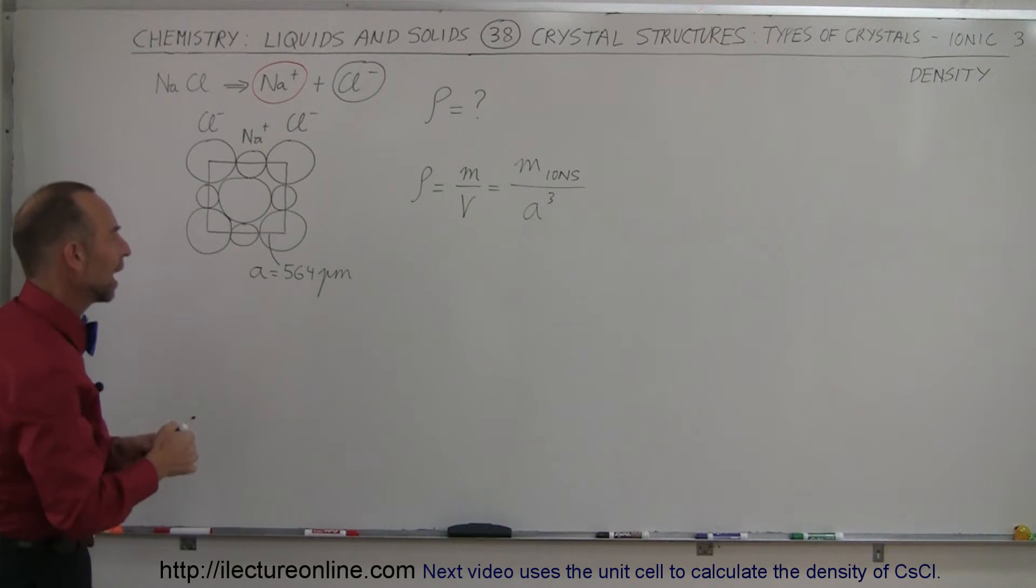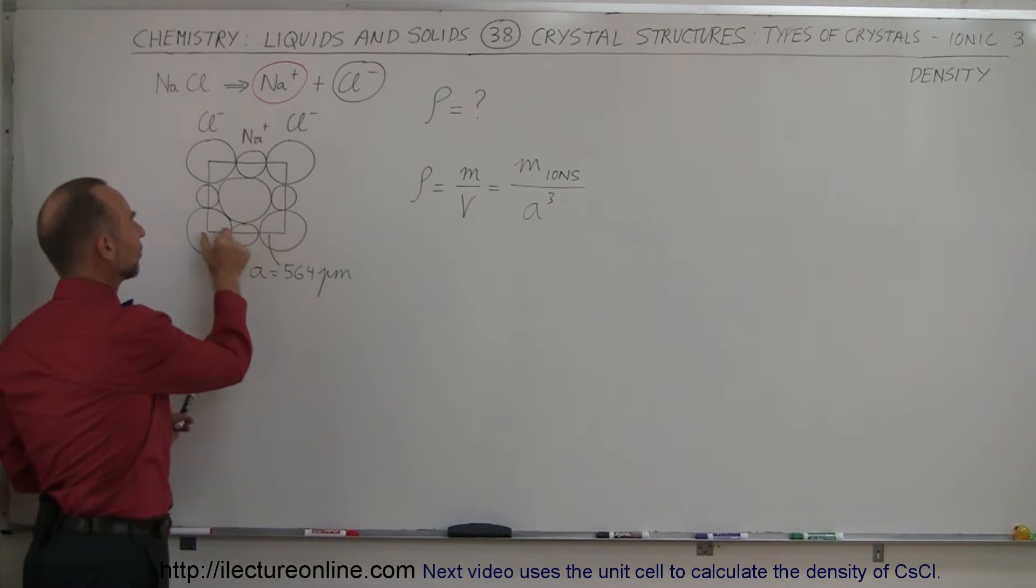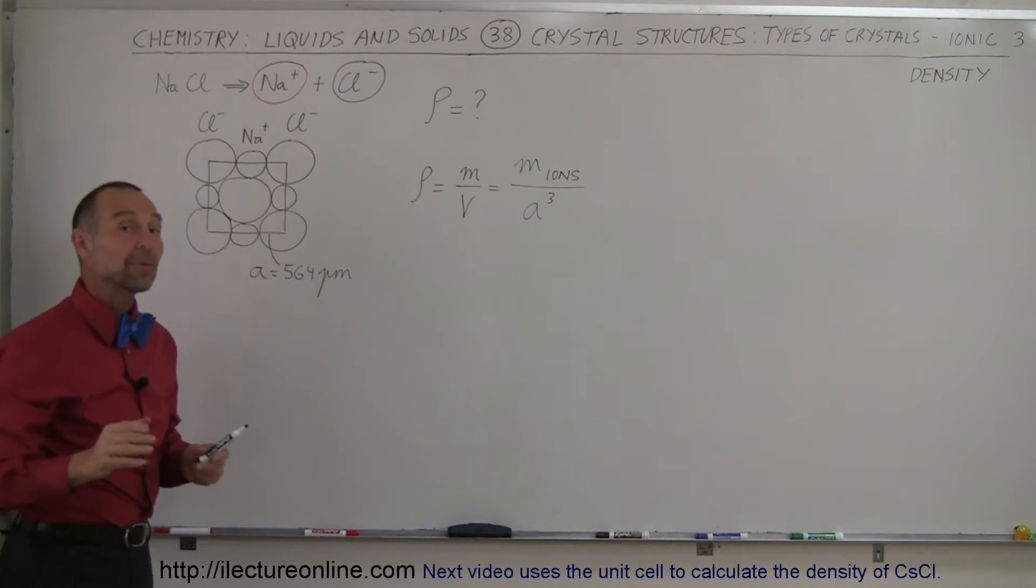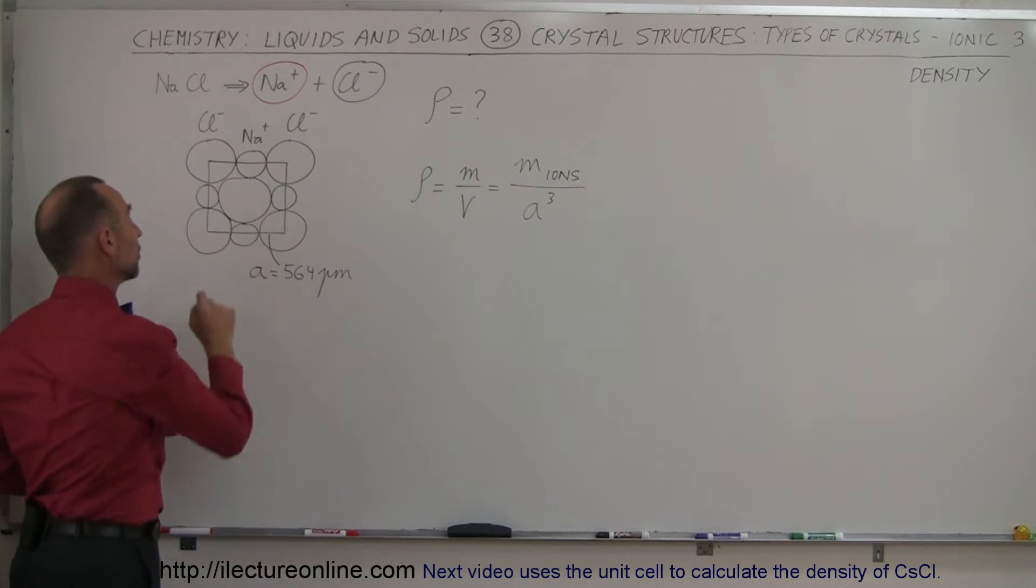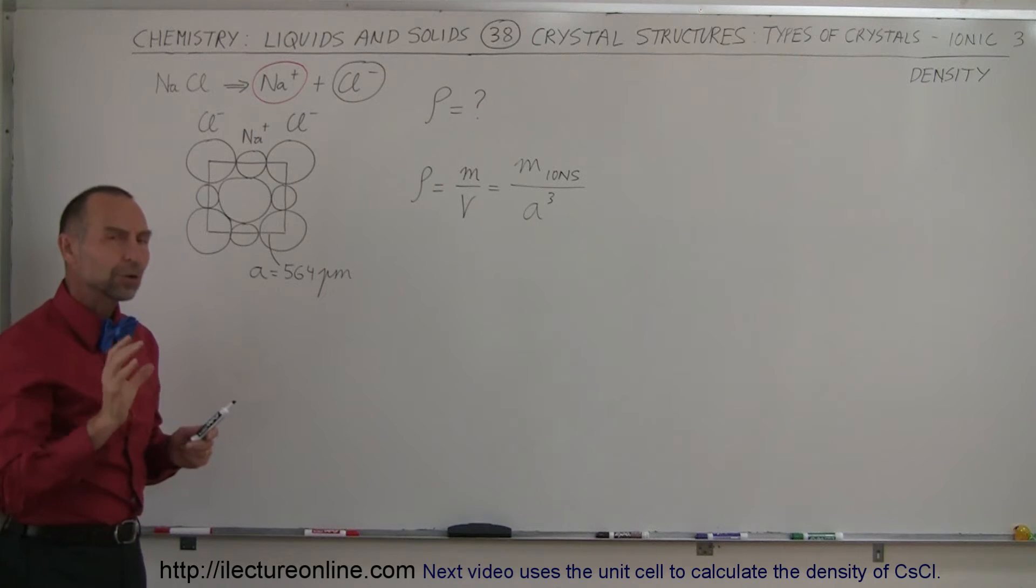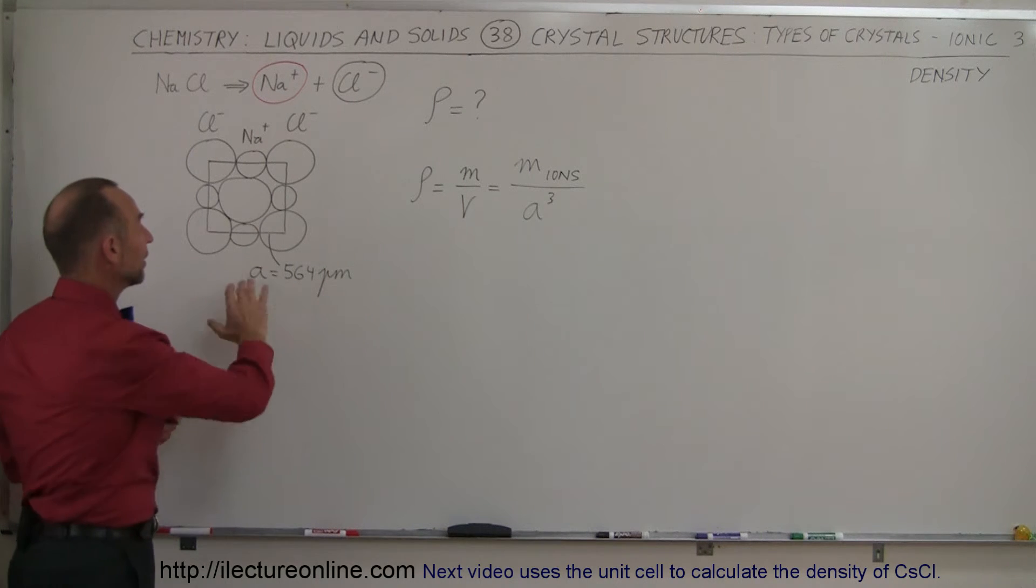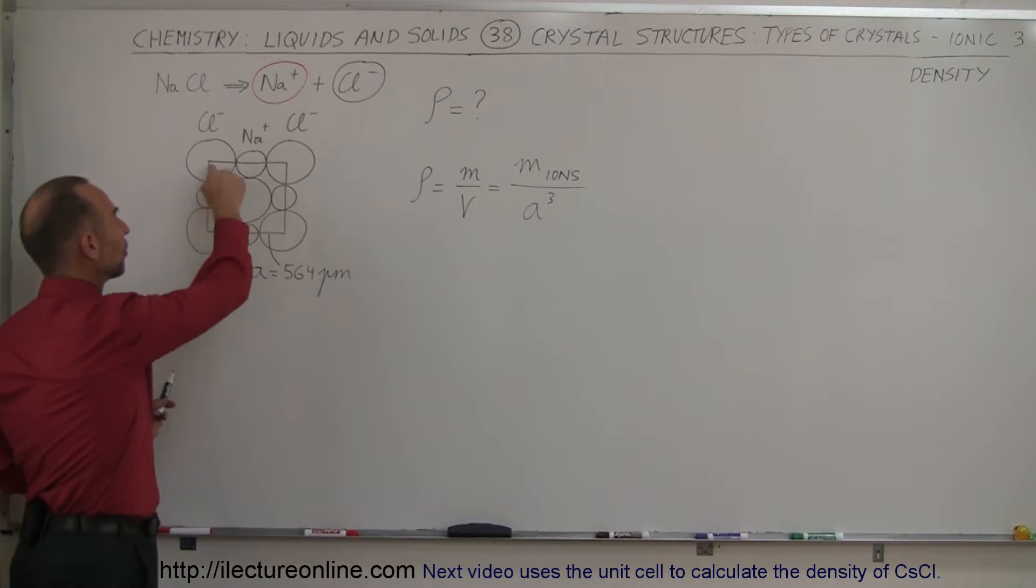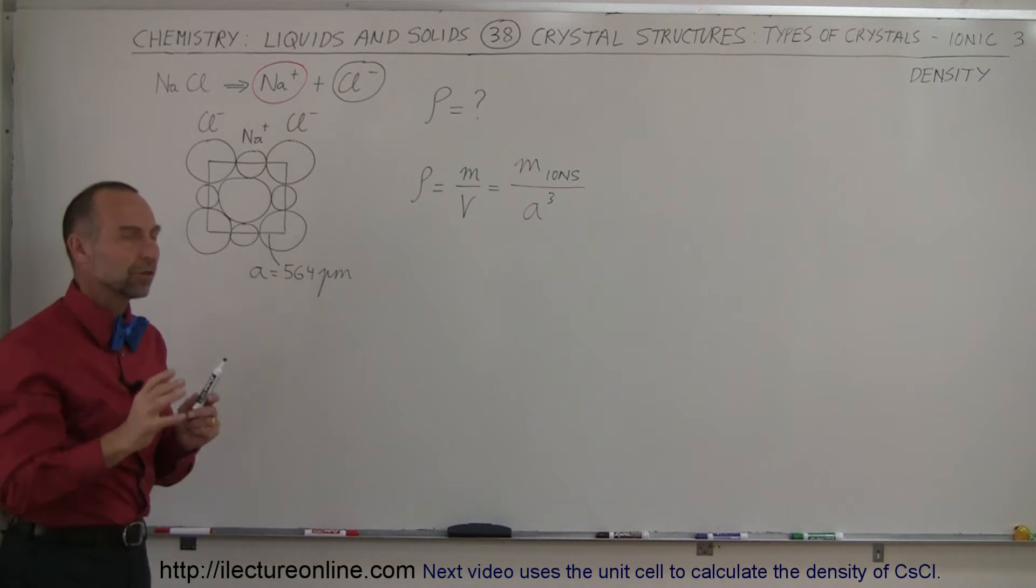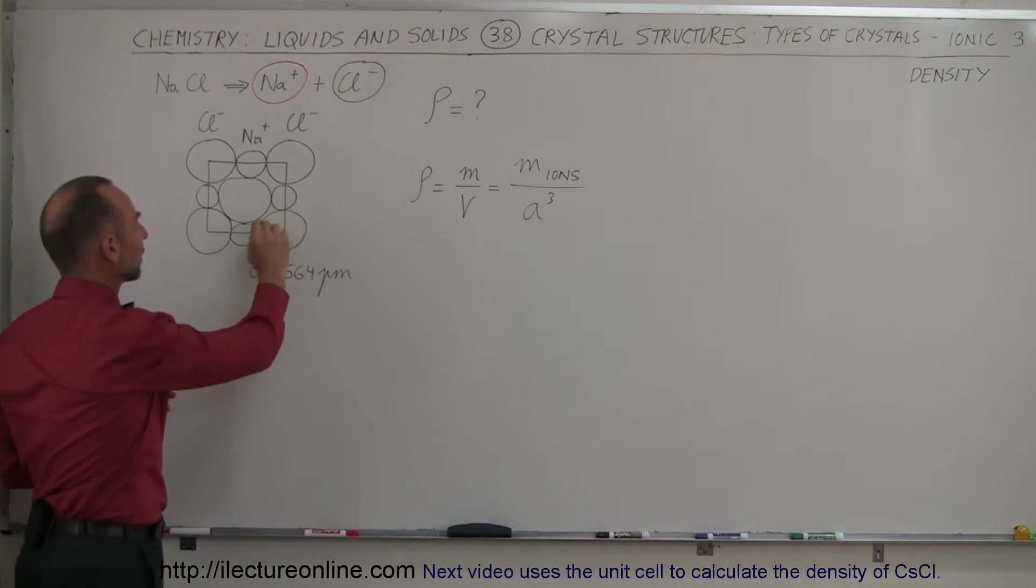Now if we go and look in the book and we find the radii of the chlorine ions and we find the radius of the sodium ion and we add all that up together, we don't quite get 564 picometers because the repulsive forces between the chlorine ions are overpowering the attractive forces with the sodium ions just a little bit because the chlorine ions a little bit bigger.